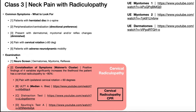In the examination, you're probably going to do a neuro screen because the patient is likely going to indicate numbness, tingling, burning, or sharp shooting pain with certain movements. That should put on your radar that you need to do a neuro screen — assessing dermatomes, myotomes, and reflexes. If somebody actually did have a radiculopathy, you'd expect some of these to be positive, giving you a positive neuro screen.